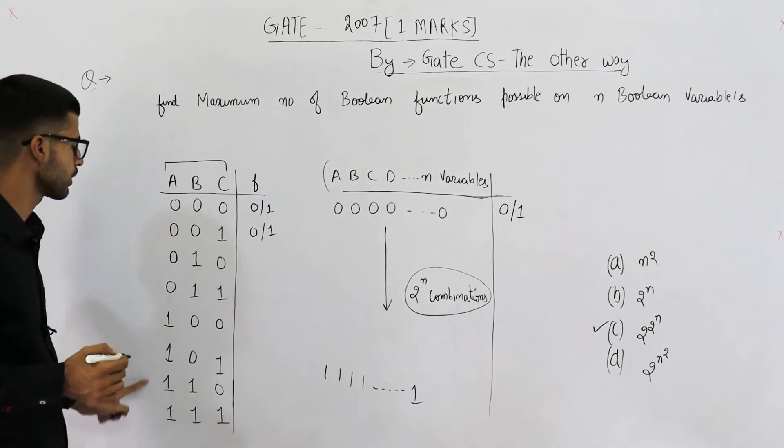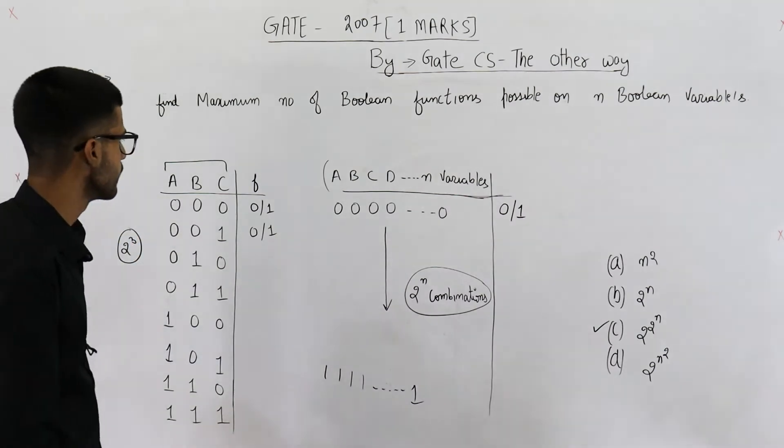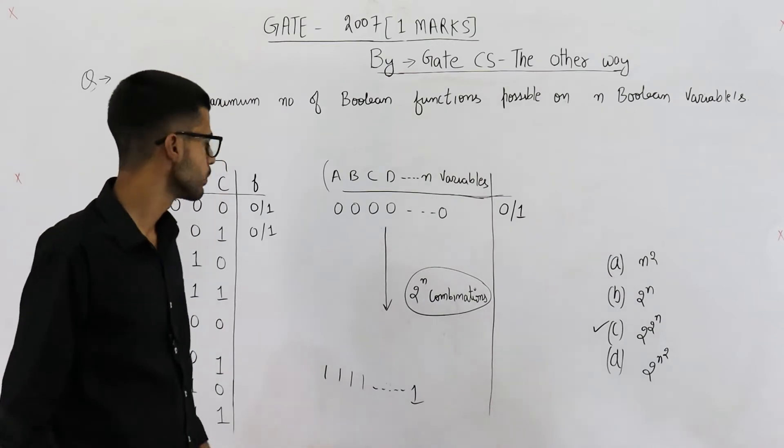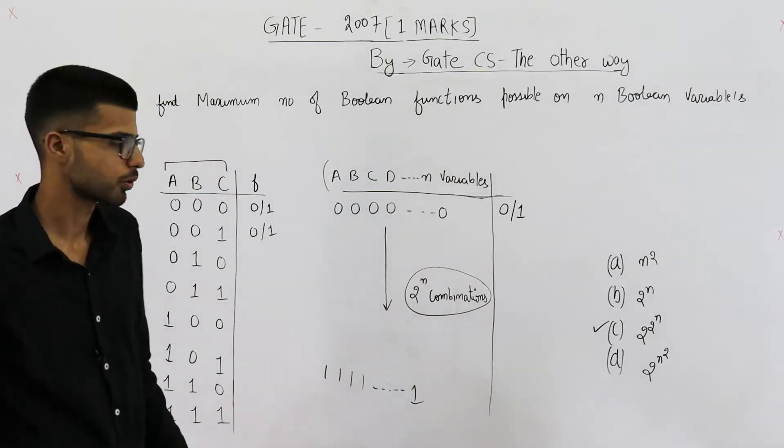These are the eight possible inputs. So the inputs are 2 raised to the power 3. Now to define a boolean function, we need to define an output at all of these eight inputs.